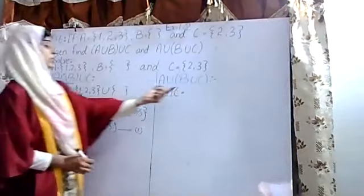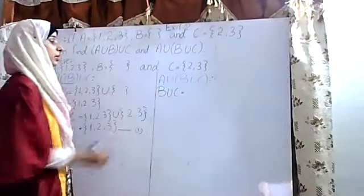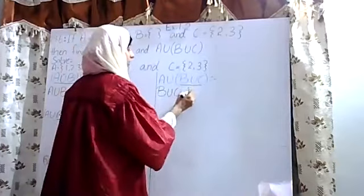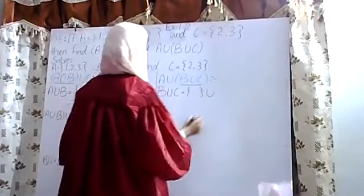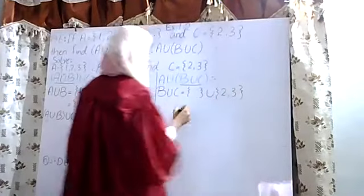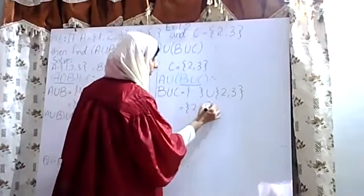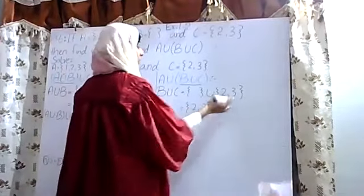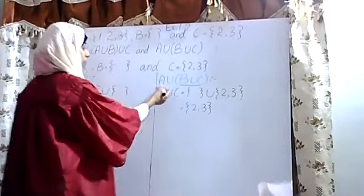Now for A union (B union C), we solve the bracket first — B union C. Set B is the null set, and set C is {2, 3}. So we write the empty set union {2, 3}. The answer is {2, 3}, because both elements of C — 2 and 3 — are the only elements present.